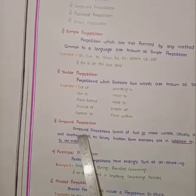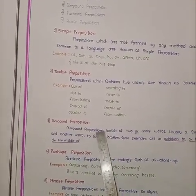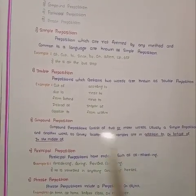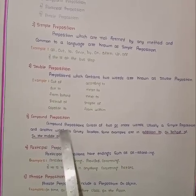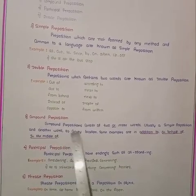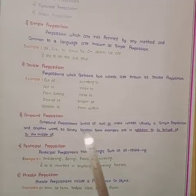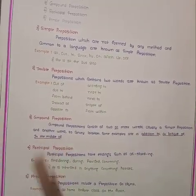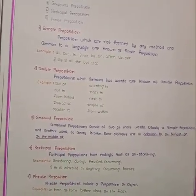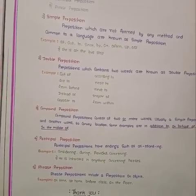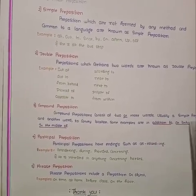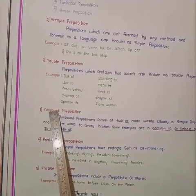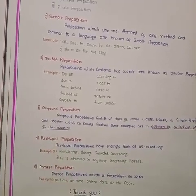Third one: Compound preposition. Compound preposition consists of two or more words, usually a simple preposition and another word to convey location. It means compound preposition consists of two or more words, usually a simple preposition and another word. Examples: In addition to, On behalf of, In the middle of. These are examples of compound preposition.